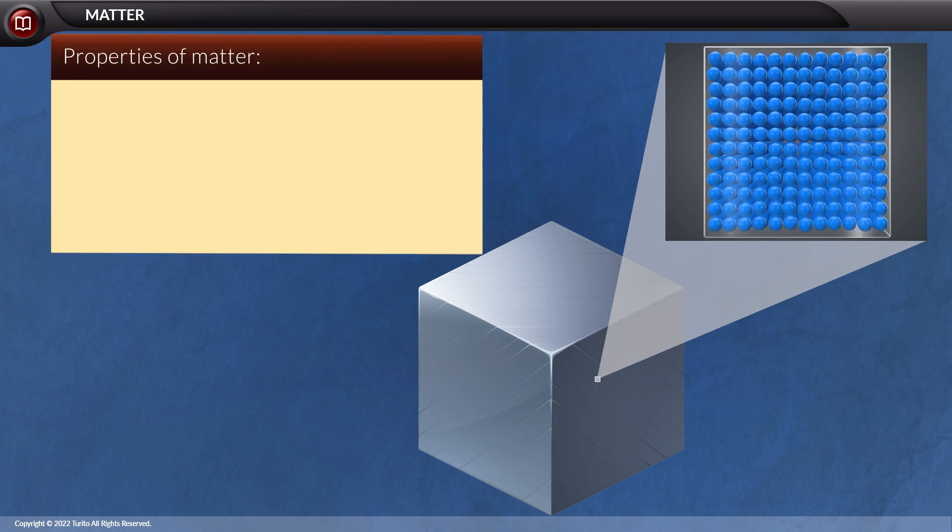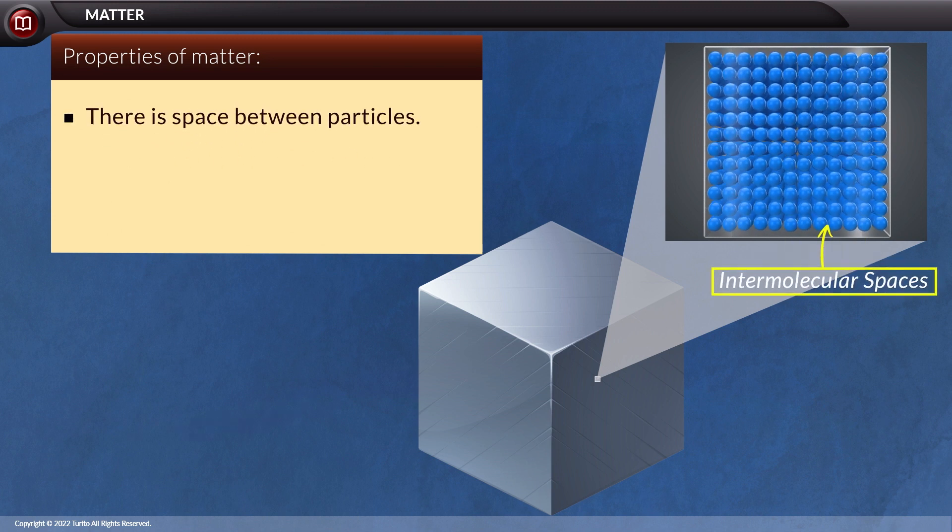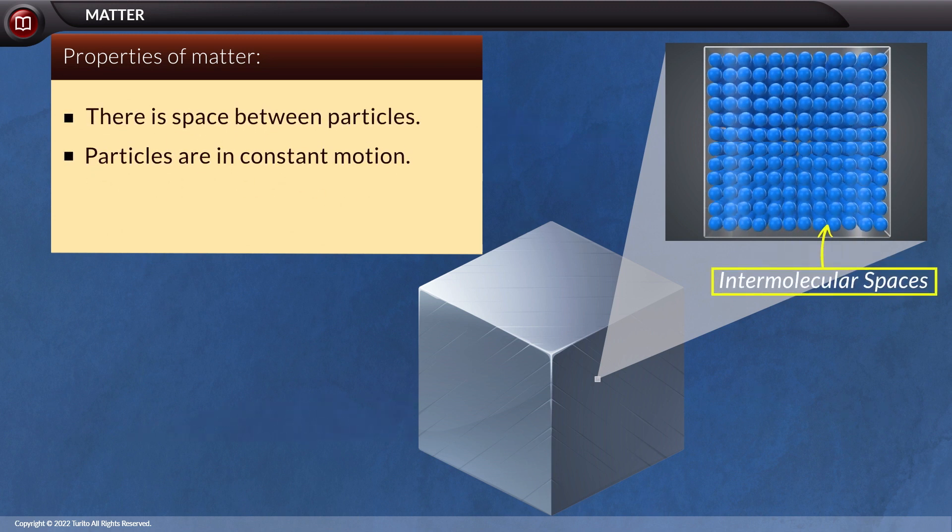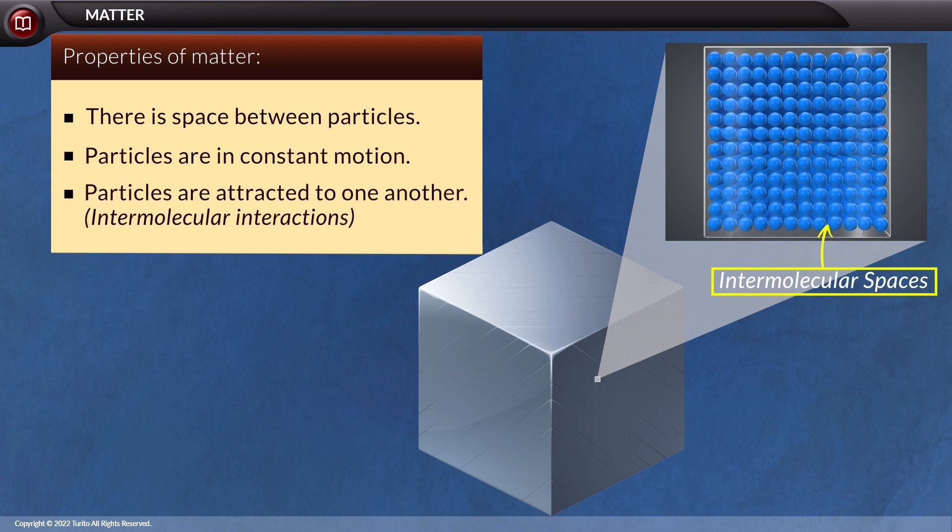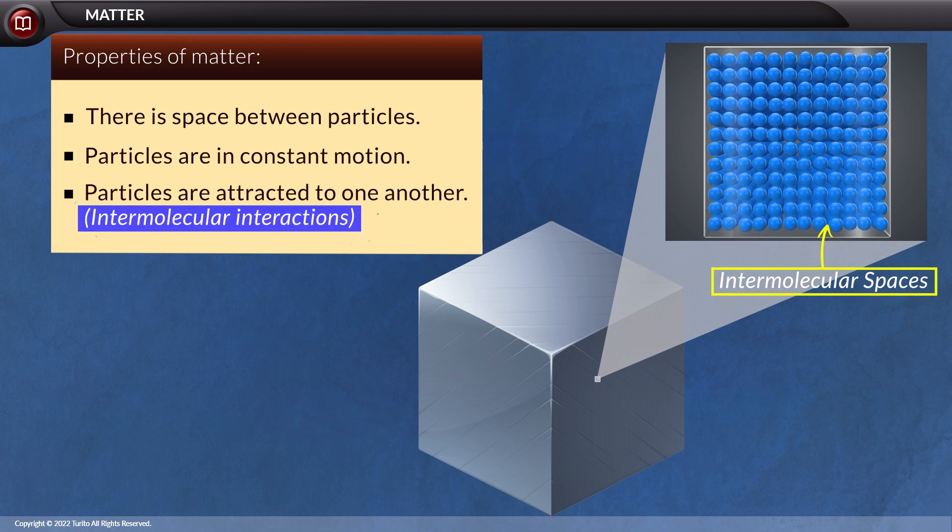The properties which are characteristic of a matter are as follows. There is space between particles. Particles are in constant motion. Particles are attracted to one another. Intermolecular interactions.